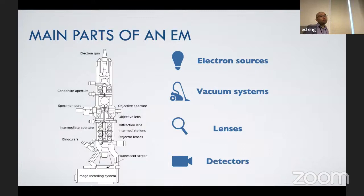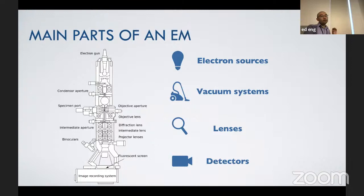An electron microscope lens is not a single lens but a compound lens with many lens coils — condensers, objectives, and projection lenses. The four main systems to understand are: electron source, vacuum system, lenses, and detectors. When you go to the practical session, you'll want to know whether the microscope is only good for screening or is ready for data collection.